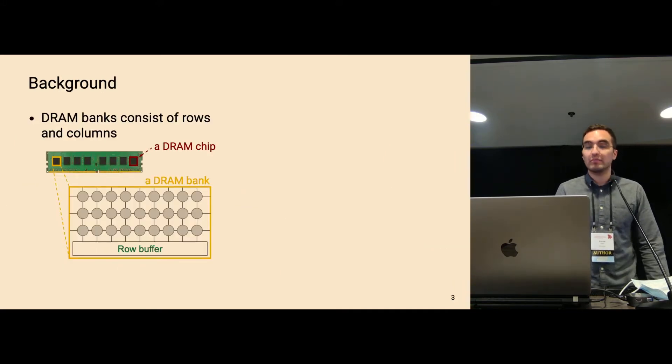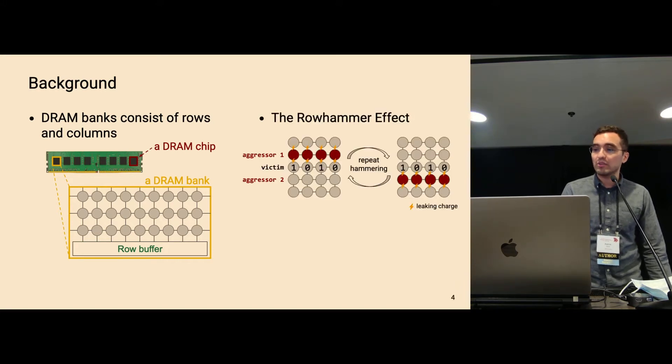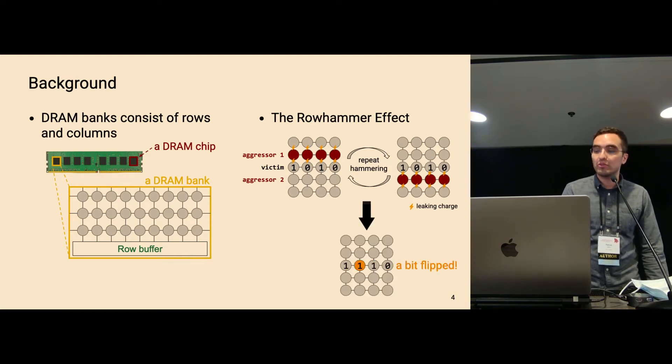To get started, let me briefly introduce you DRAM and row hammer. So here you can see a PC DIMM with eight DRAM chips. Each of these chips is composed of multiple DRAM banks that are organized like a matrix. And to exploit row hammer, you typically have two aggressor rows here in red and then you access them over and over again many times and very quickly. This leads to charges that leak from the capacitors in the victim row. This is in between those two aggressor rows. And then eventually you will see a bit flip.